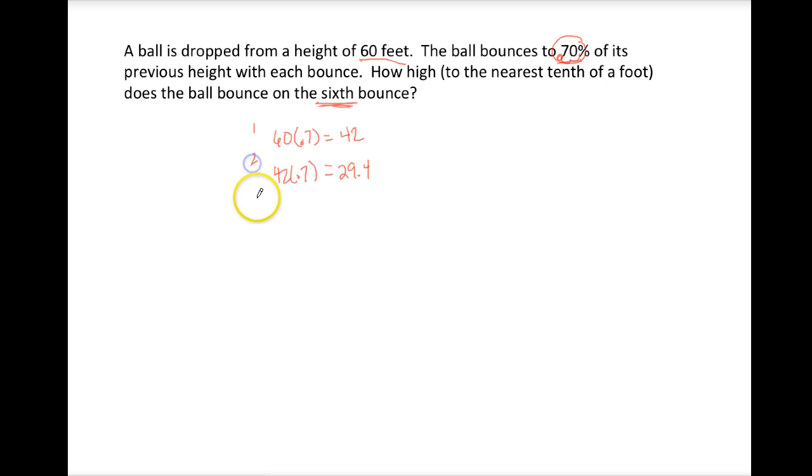First, second, on the third bounce, we take our 29.4 times .7, and we get 20.58. The next one, we take our 20.58 times .7, and we get 14.406.